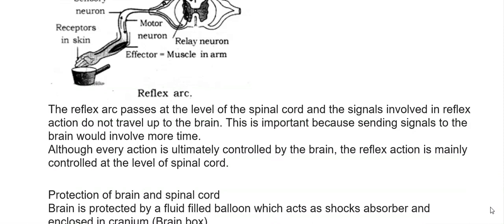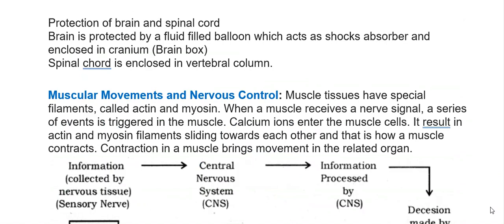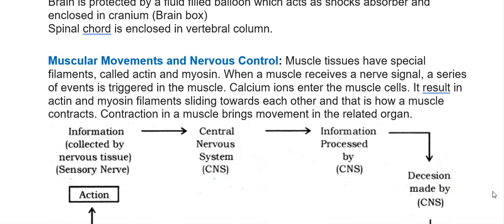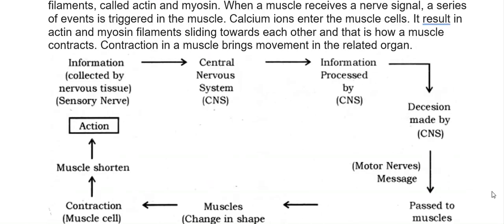Sending signals to the brain would involve more time. Although every action is ultimately controlled by the brain, reflex action is mainly controlled at the level of the spinal cord. The brain is protected by a fluid-filled balloon acting as a shock absorber, enclosed in the cranium (brain box), while the spinal cord is enclosed in the vertebral column. Muscle tissues have special filaments called actin and myosin. When a muscle receives a nerve signal, calcium ions enter the muscle cells, causing actin and myosin filaments to slide towards each other, contracting the muscle and bringing movement to the related organ.